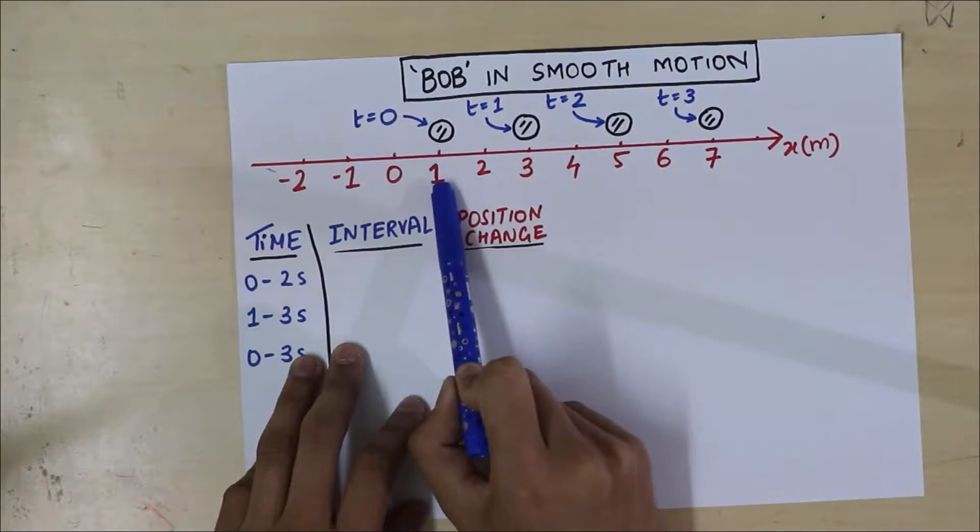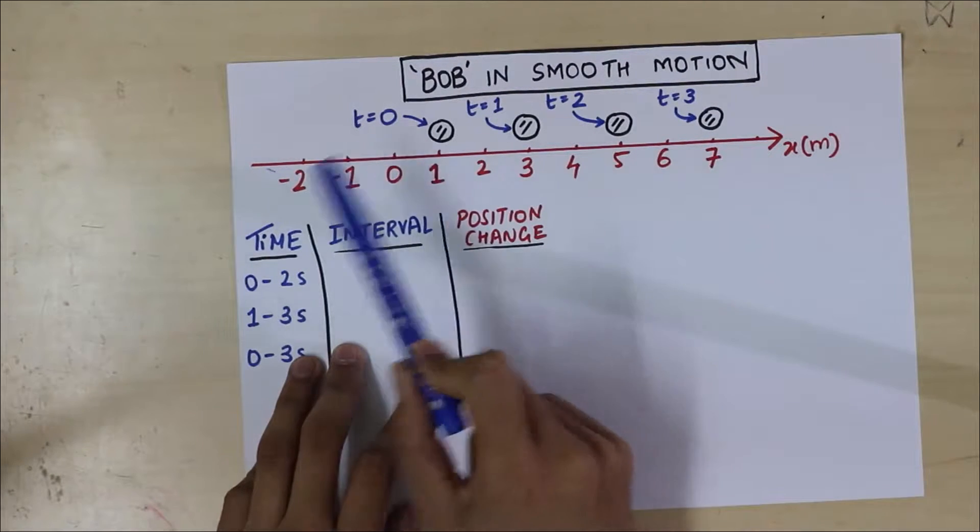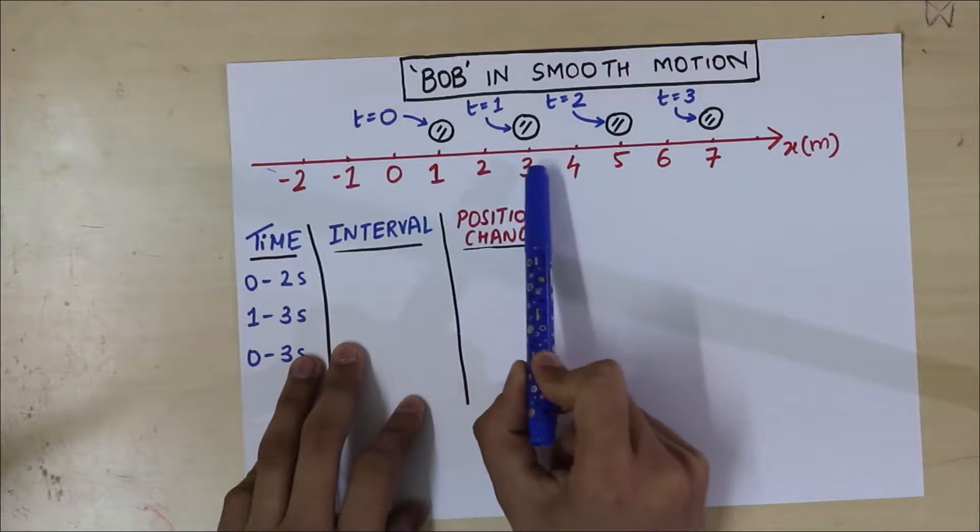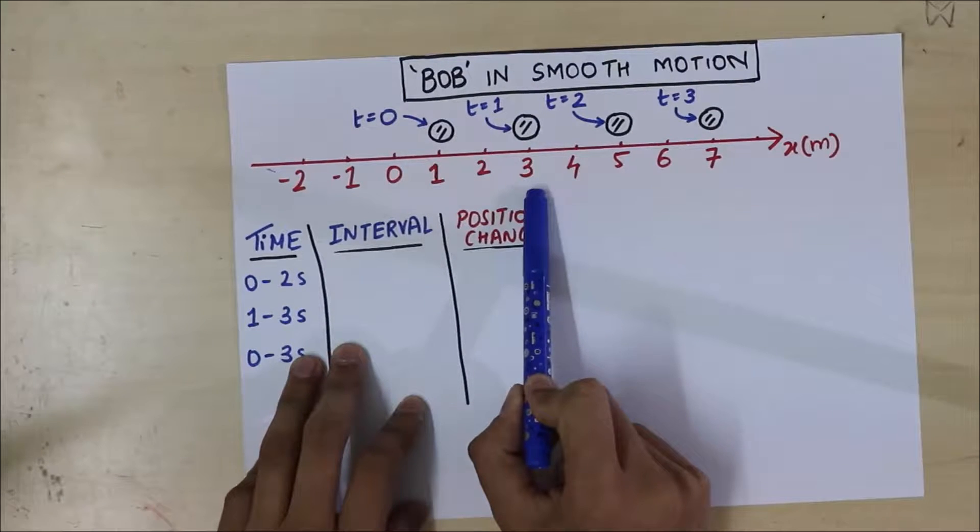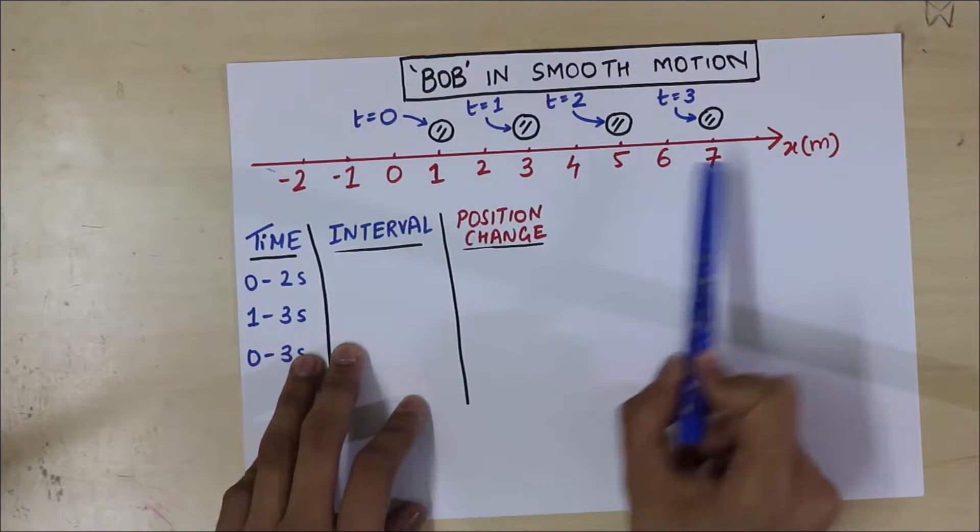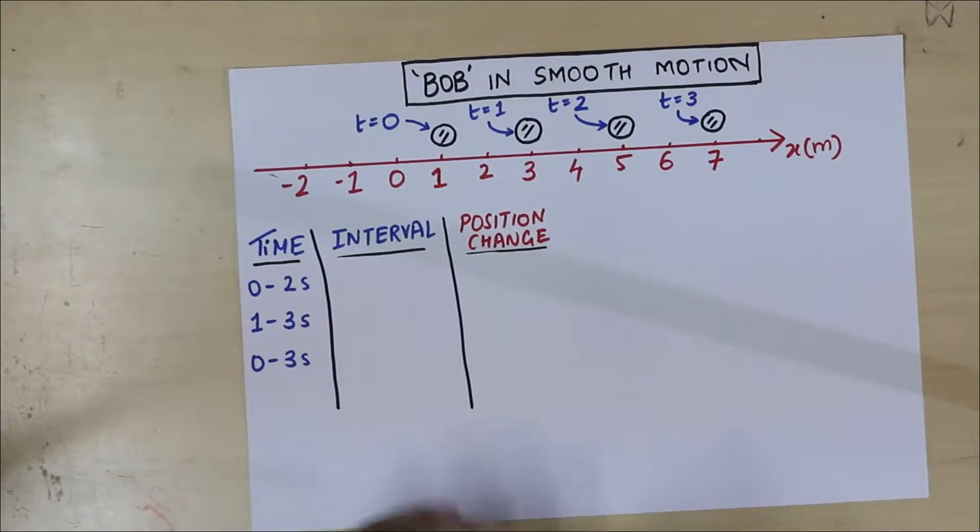when Bob was at 1 meter, the time is 0. And then if you looked at the animation carefully, you would see that at time 1 second, Bob has come to x equal to 3. And at 2 seconds, it's at x equal to 5, and so on and so forth.